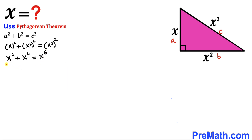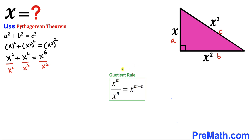Now we are going to divide each and every term by x squared across the board. Recalling the quotient rule, we subtract the exponents. So our equation becomes 1 plus x squared equals x to the power 4.